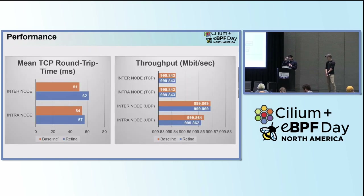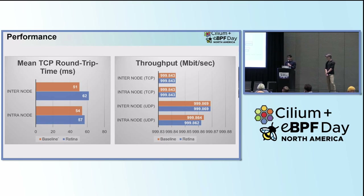Quickly touching on performance — we are installing eBPF programs in the data path and want to make sure we are not degrading network latency. The left-hand graph shows mean TCP round-trip time. Compared to baseline for intra-node traffic, we are introducing around 2.5 to 3 milliseconds of delay. For intra-node, we are introducing almost 10 milliseconds — we've identified that as our drop-reason plugin, and we are improving it to use a newer Linux kernel version which provides a better point to attach a kprobe. On throughput, we are pretty much comparable to baseline.